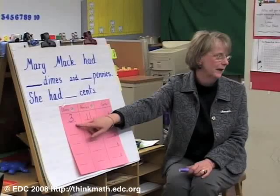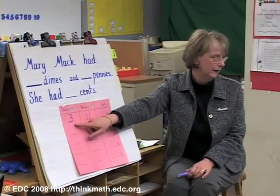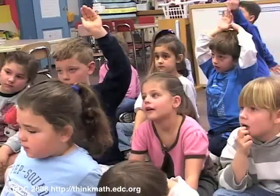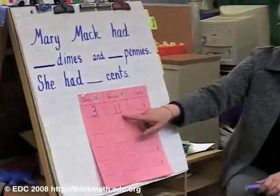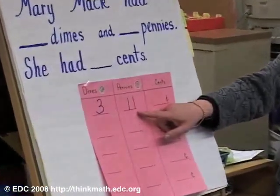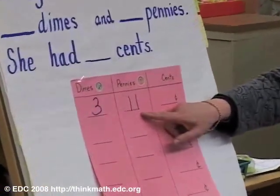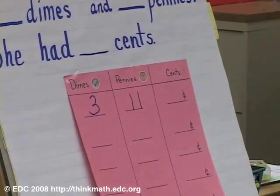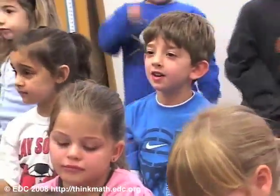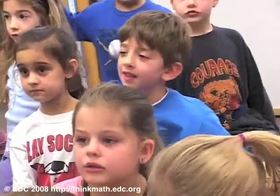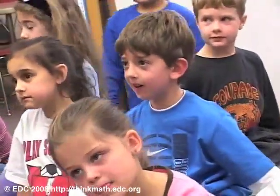Who can just count the dimes for me? How much did she have just counting her three dimes, Nicholas? Thirty. And eleven more pennies. Andrew? Forty-one. Andrew, can you tell us the way you got that answer? Could you tell us about your strategy? I knew eleven and thirty was forty-one.